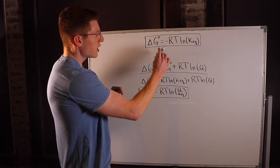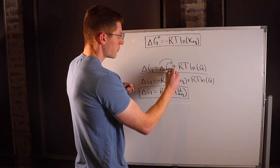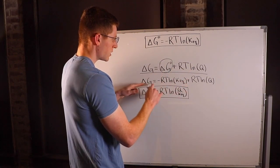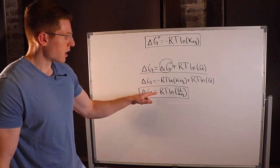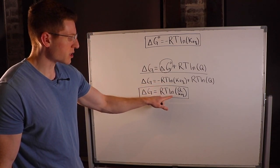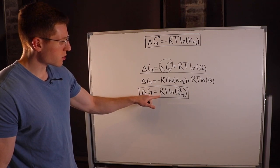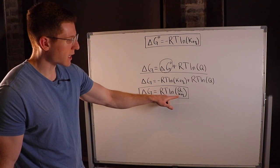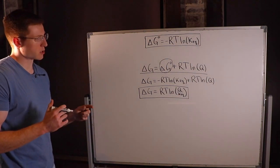If we substitute in what we know delta G° equals and use the property of logarithms, we can simplify: delta G equals RT ln(Q/K). These two equations — delta G° = -RT ln(K) and delta G = RT ln(Q/K) — are important to know for solving problems.